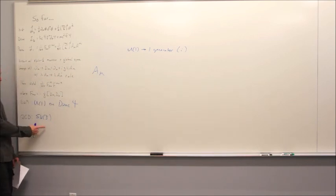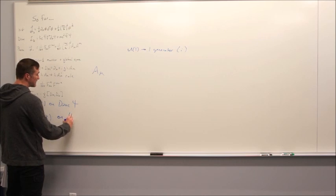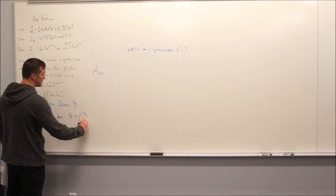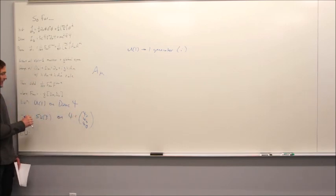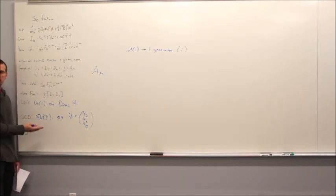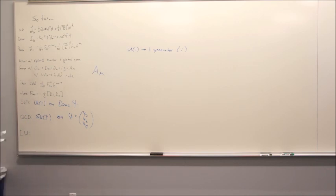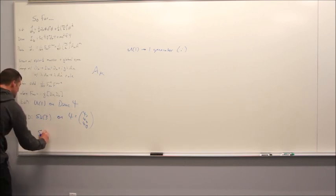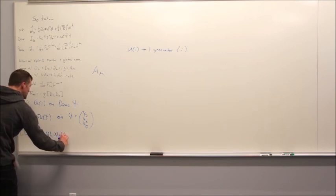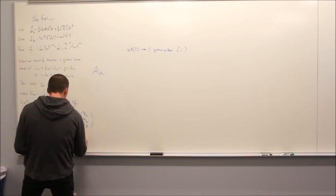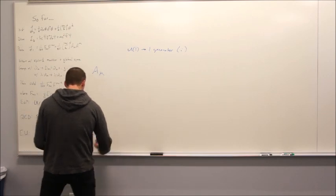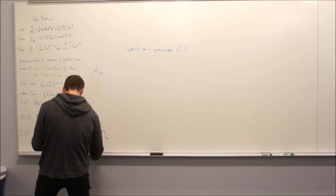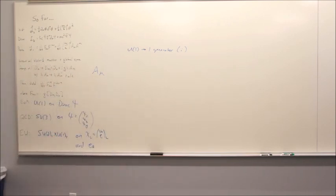Finishing out the story of QCD: if you think of SU(3) acting on a color triplet — a three-component vector in color space — you can play out this exact same story, and you get the strong interactions. And then we learned last time that if you think of the symmetry group SU(2)_L cross U(1)_hypercharge, acting on the left-handed doublets — in the lightest mass case that's the electron neutrino and the electron — and the right-handed singlet of the electron, then you get the electroweak unified gauge theory.